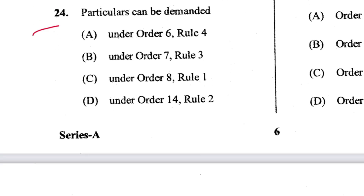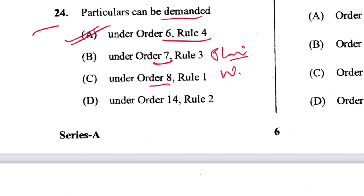Question 24: Particulars can be demanded under Order 6 Rule 4. A is the answer. Order 7 is plaint, Order 8 is written statement, Order 14 is framing of issues, and Order 6 is pleading.